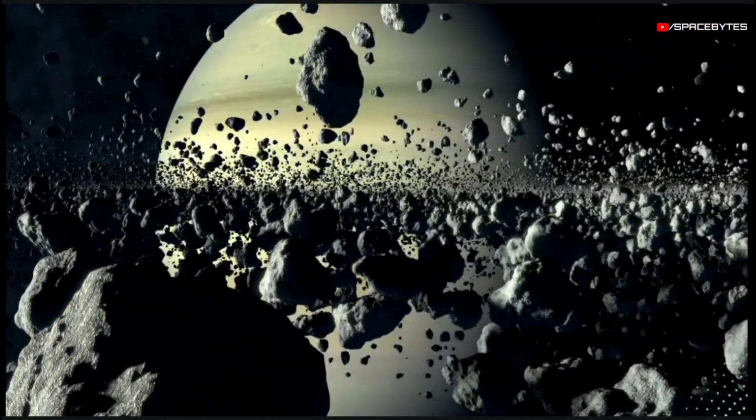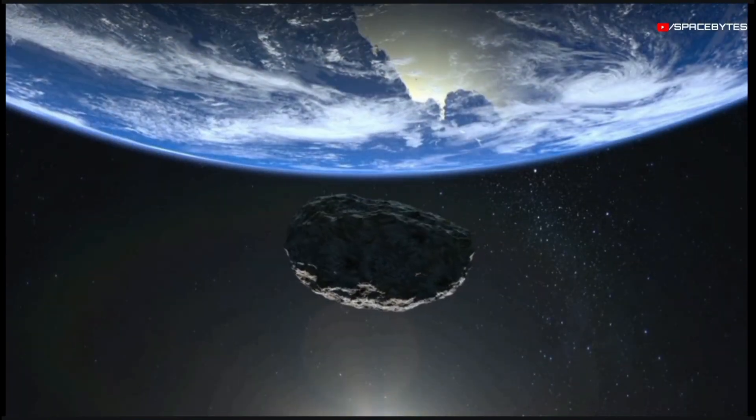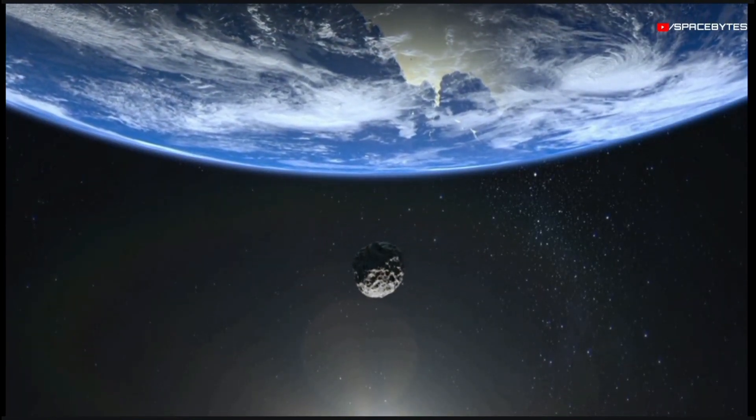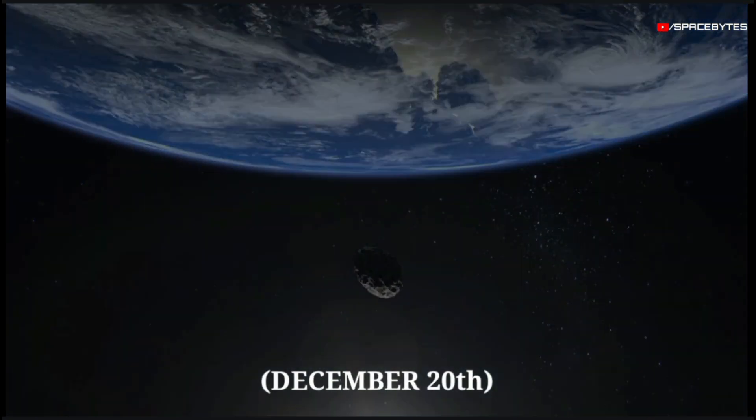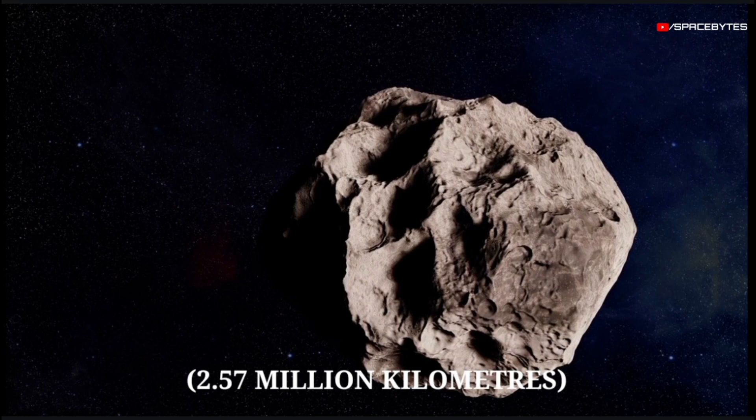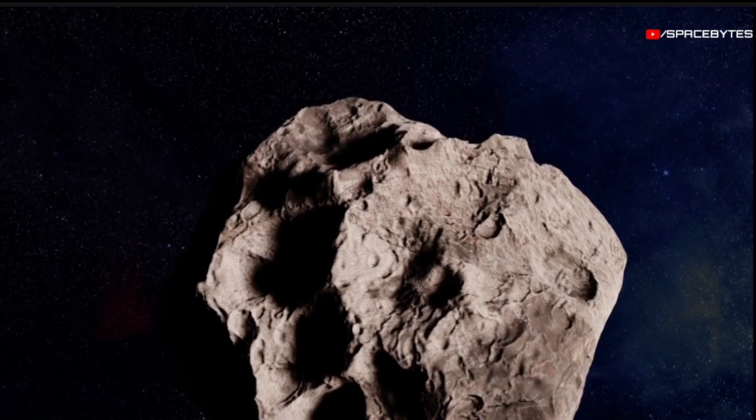It also belongs to the Apollo group. The asteroid 2014 HK129 will fly past Earth on December 20th at a distance of 2.57 million kilometers at a whopping speed of 43,200 kilometers per hour.